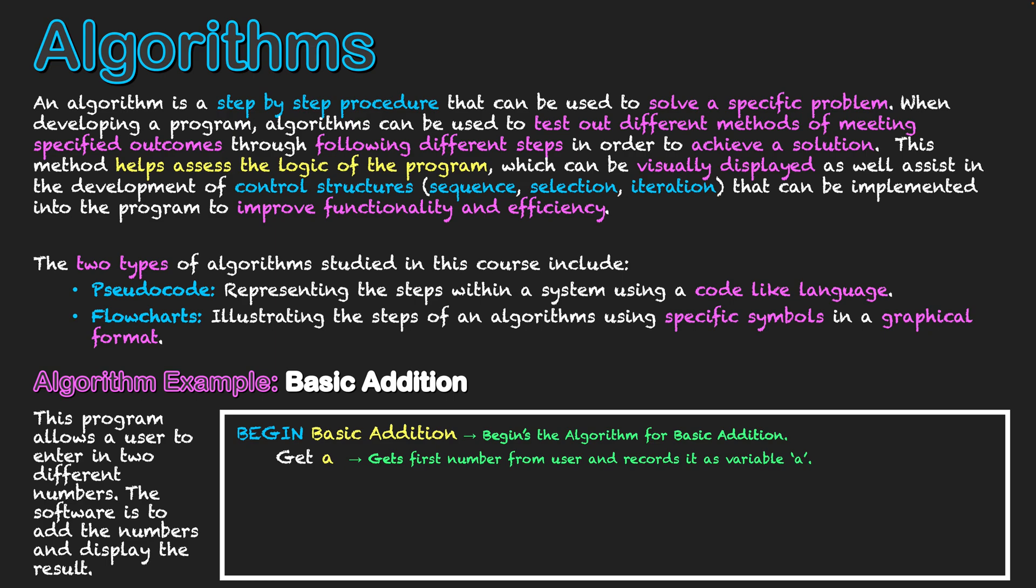And you might be able to guess the next line now. We've also got to get b, which is the second number from the user, and we'll record it under variable b. So now we have our two numbers recorded as two different variables, a and b.